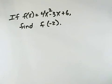If the function f of x equals 4x squared minus 3x plus 6, find f of negative 2.